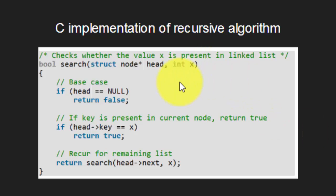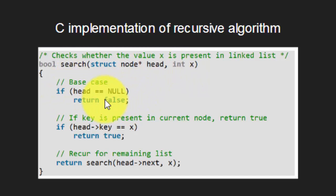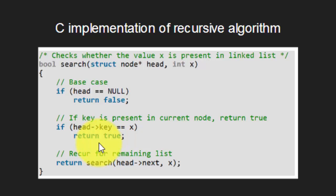Let us now look at the implementation of this recursive algorithm in C programming language. This function takes two arguments: the head node of the list and the key to be searched. It checks whether this node is null or not. If this node is null, the function will return false — this forms the base case of the recursion. If this node is not null, the function checks whether the key value of this node is equal to the given key. If it is equal, the function returns true. Otherwise, it searches for the key in the rest of the linked list.